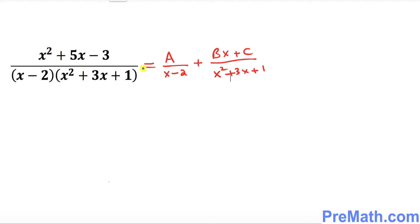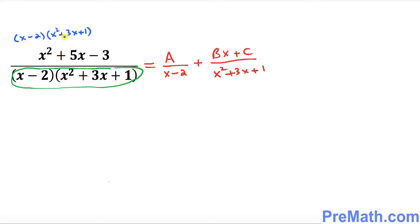The next thing we want to do is get rid of these fractions. We're going to multiply both sides by (x minus 2)(x squared plus 3x plus 1). So we multiply that quantity across the board on all terms.